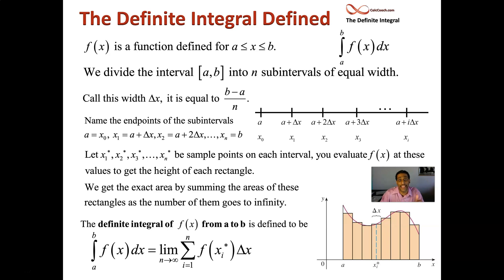The limit as n goes to infinity of the sum we're adding up. So there's a summation sign there and i is going to go from one to n. There's the height, which is f of x i star, and there's the width, which is delta x. That's the definition of the definite integral.